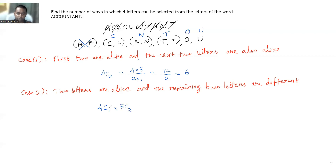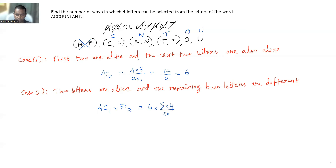The number of ways to select two from five different letters is 5C2. Since 4C1 = 4, and 5C2 = (5×4)/(2×1) = 10, the total for Case 2 is 4 × 10 = 40.